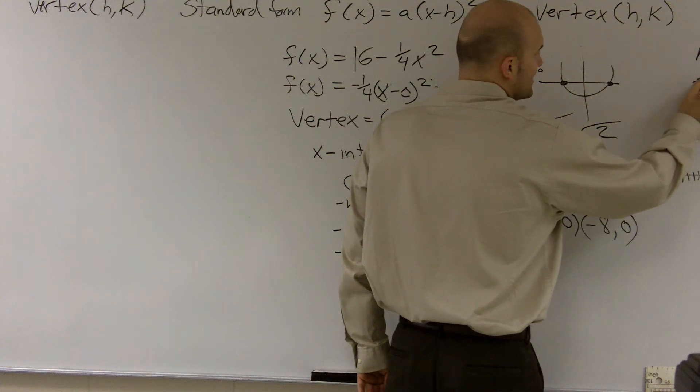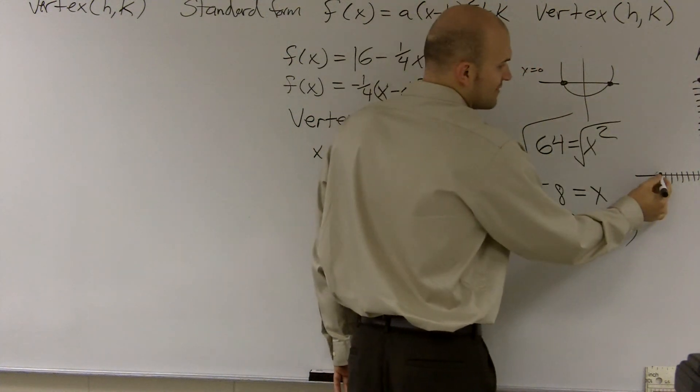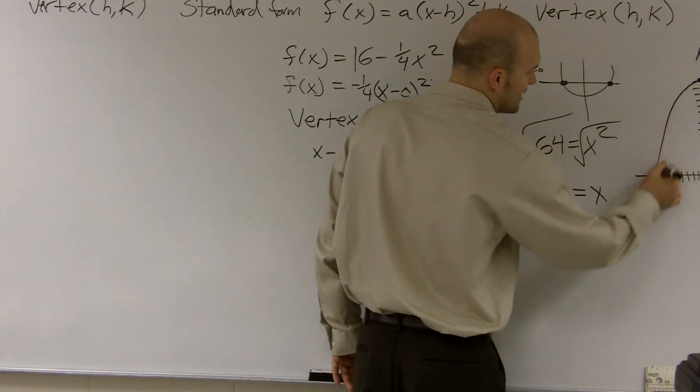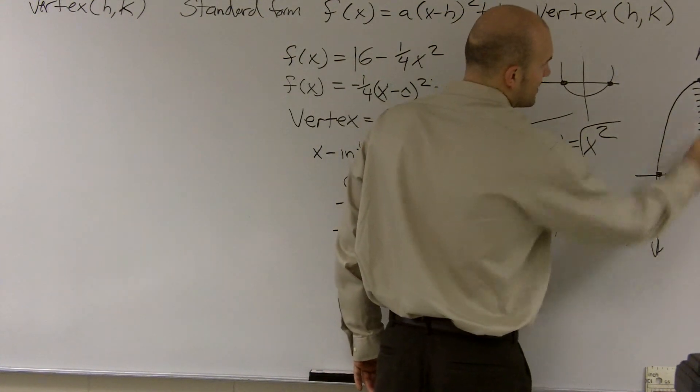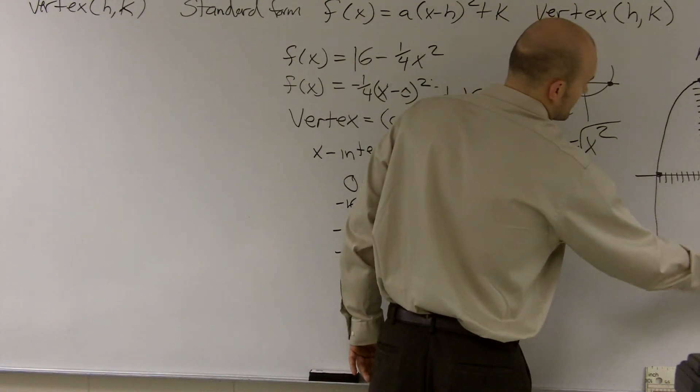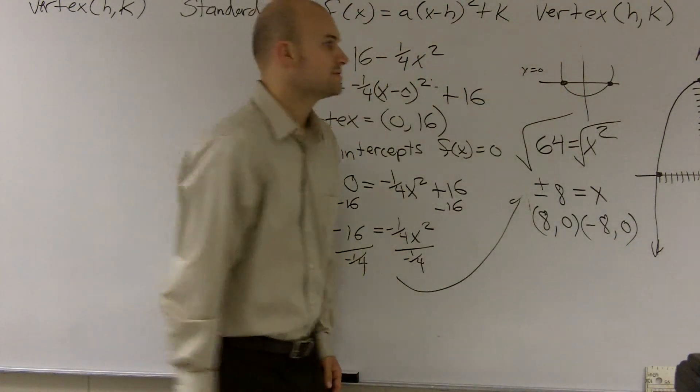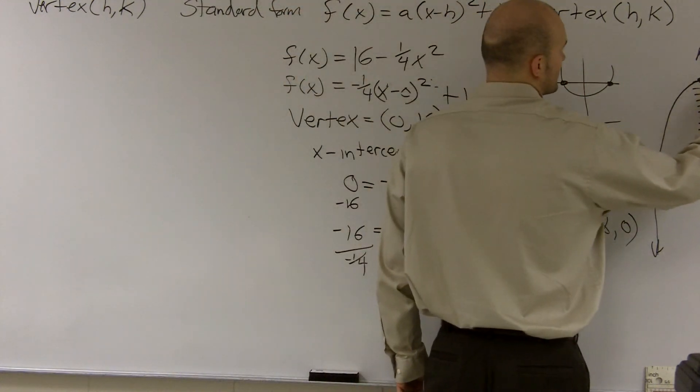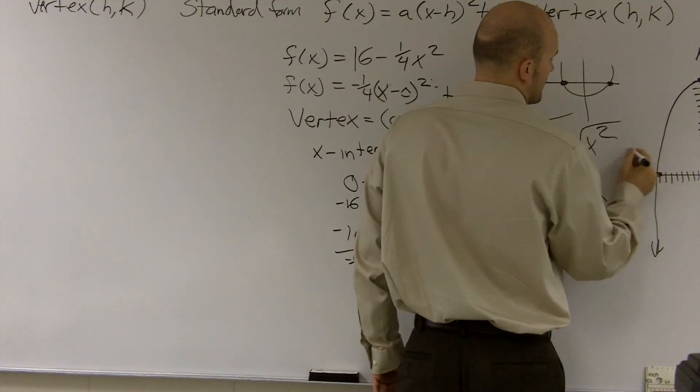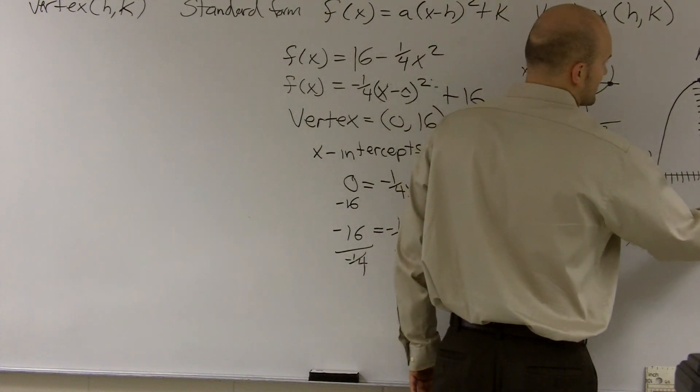So if I make a dot there for my vertex, I have a dot for my two y-intercepts, and all I really need to do is connect these two, and then what I've created is my graph. So here's my vertex, zero comma sixteen, and there's my two x-intercepts.